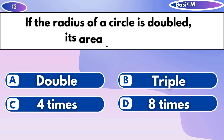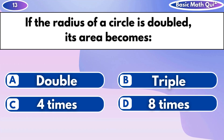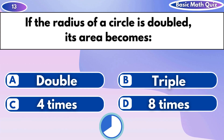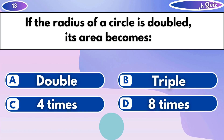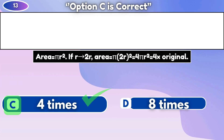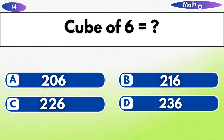If the radius of a circle is doubled, what does its area become? If the side of a cube is 6, find its volume.